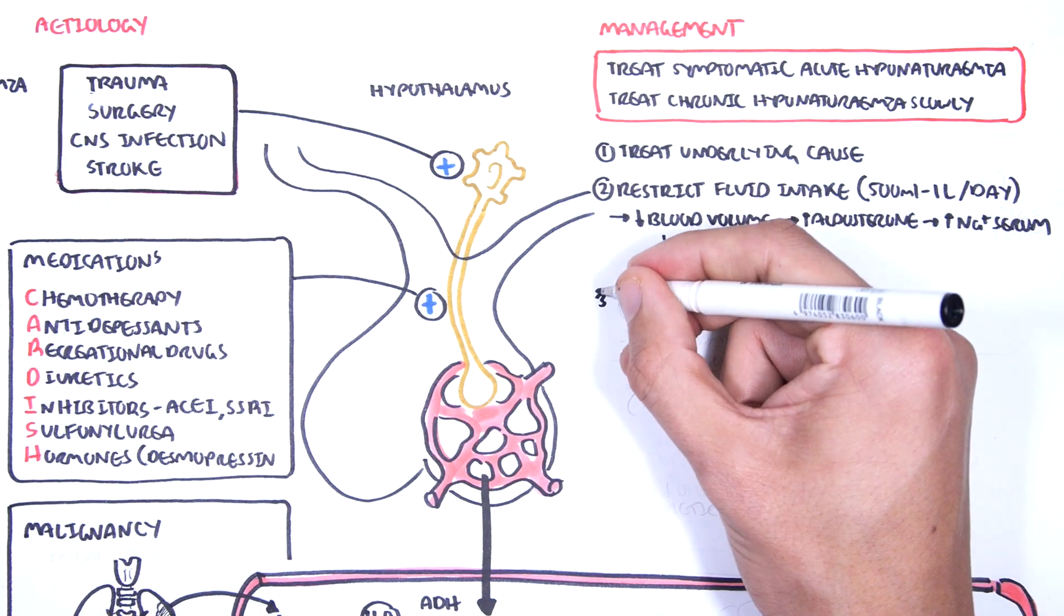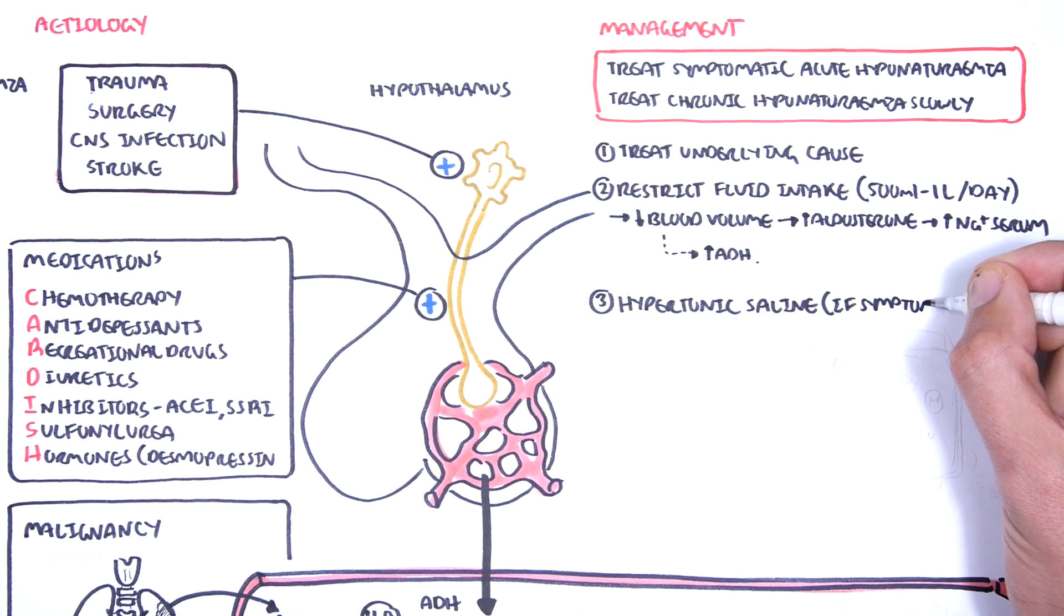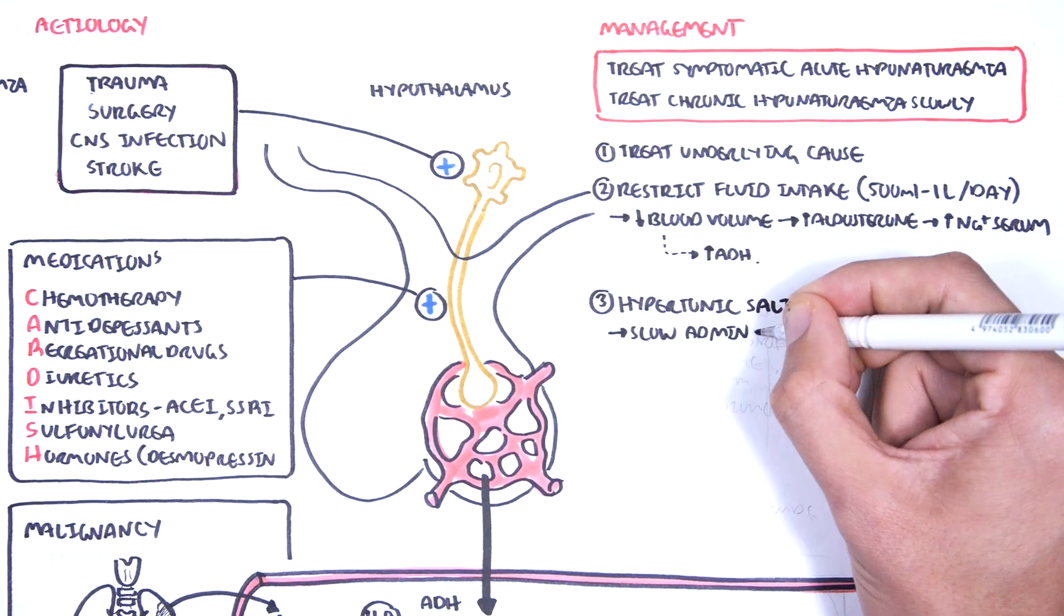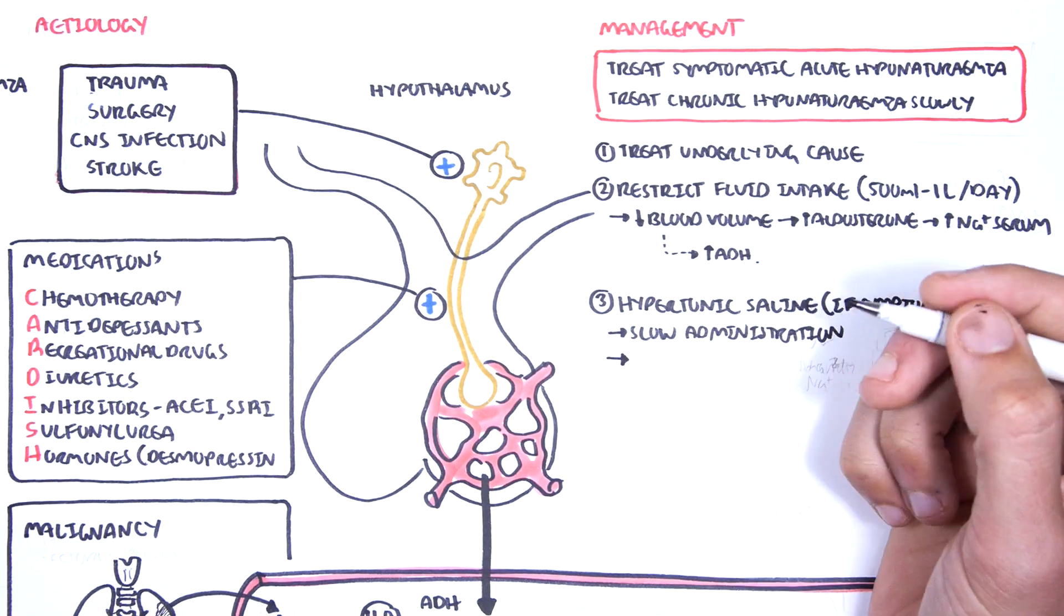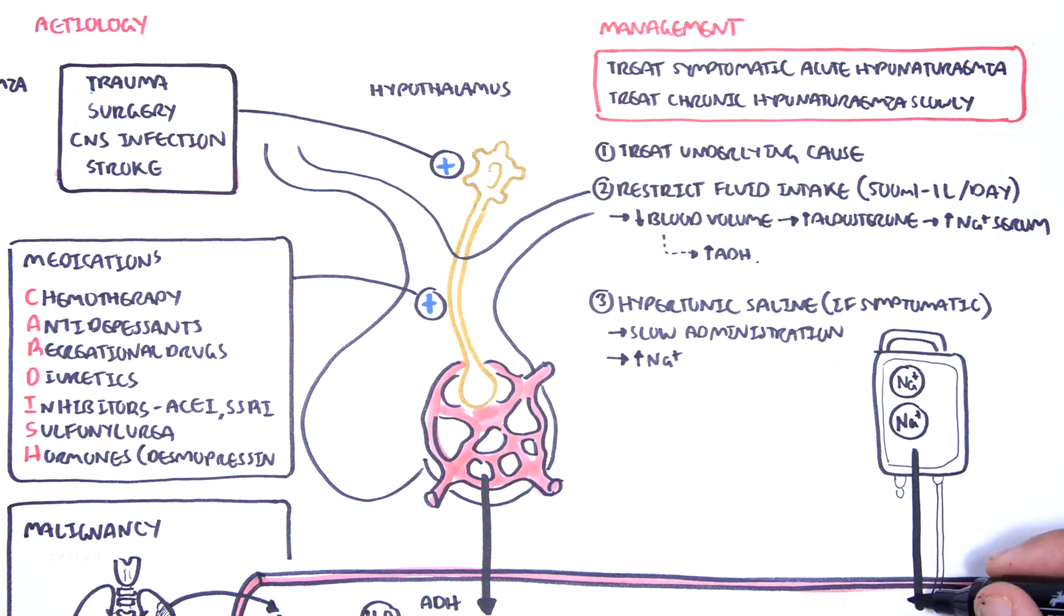Number three, administration of hypertonic saline if patients are symptomatic in any way. This has to be given slowly. Hypertonic saline has sodium in it. The fluid will also increase plasma volume.